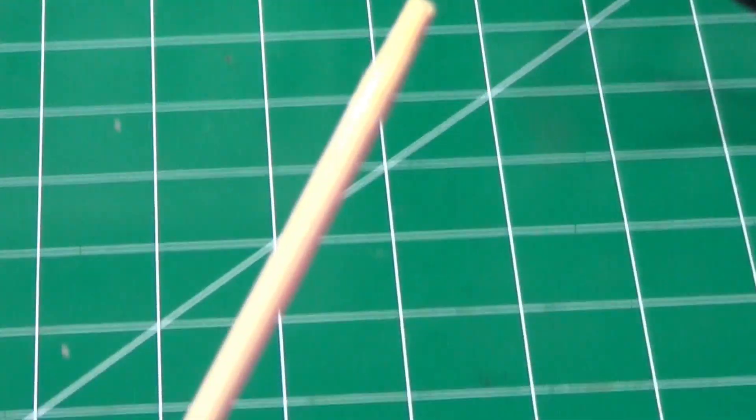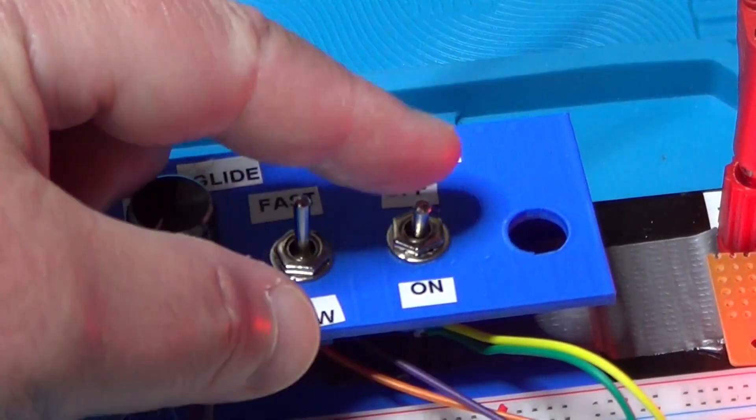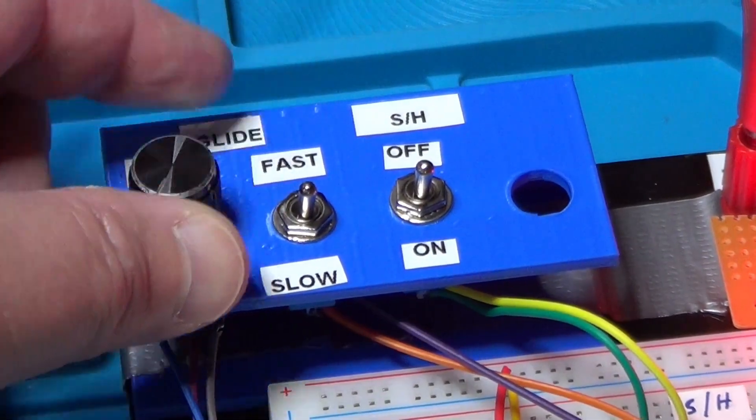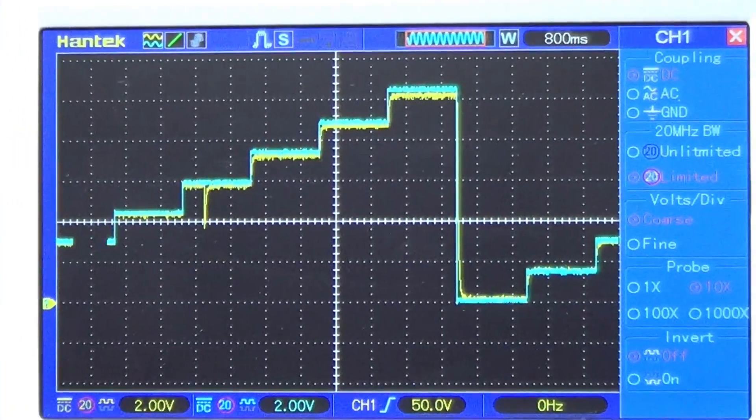But I will switch the range to slow. And so, now we have the fastest speed of the slow range, which is a delay of about 24 ms. And we can see its effects on the oscilloscope.